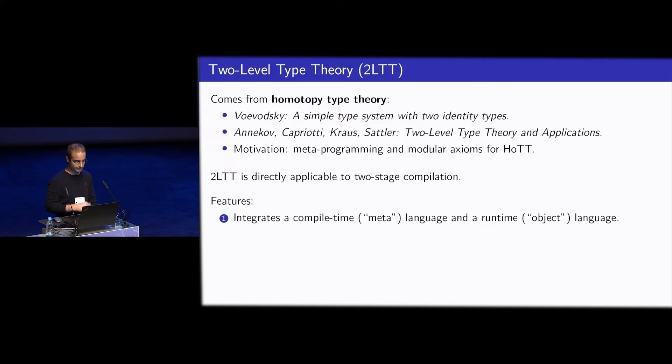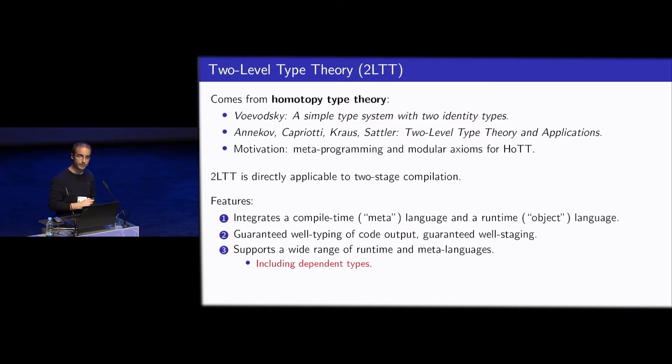So what are the features? There's an integration of a compile-time language and a runtime language. And there's also a guarantee of well-typing of code output and also a guarantee of well-staging. And by well-staging, I mean that in the generated code, there are no metaprogramming features anymore which live in the meta stage. And it also supports a wide range of runtime and meta languages. So here we can make a choice. We can make the two languages very similar, but we can also choose to make them different. And there are certain trade-offs and advantages here. And we can also have dependent types both in the meta language and the object language. And this is actually what I choose to develop in this paper. And also support percent staging by evaluation. This is analogous to normalization by evaluation in the sense that we are evaluating a staged program into a semantic domain. And then we are extracting the code output from this semantic domain.